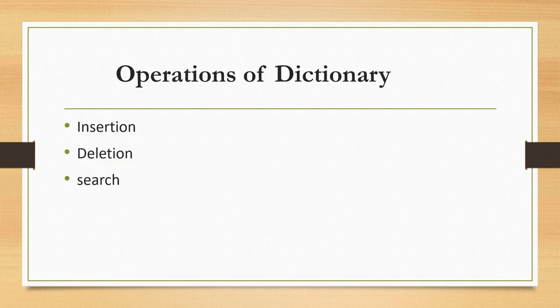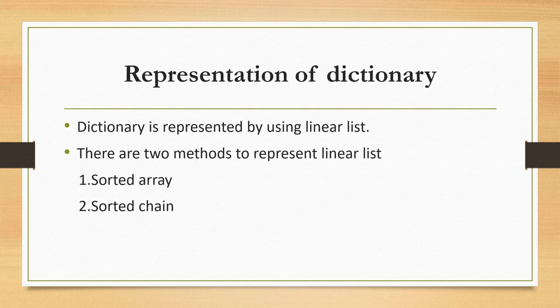Next, operations of dictionary — we have 3 operations: insertion, deletion, and search. Next, representation of dictionary: a dictionary is represented using a linear list, and there are 2 methods to represent a linear list — sorted array and sorted chain. We will see these 2 methods in the next video.